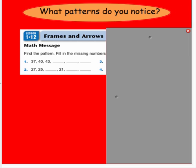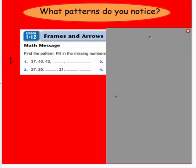Take a look at the math message. The question wants you to look for a pattern and then fill in the missing numbers. Number 1, we're starting at 37 and then it's going up to 40 and then up to 43. I can see the numbers are increasing, so I know I'm adding 3. So 37 plus 3 is 40, 40 plus 3 is 43, 43 plus 3 brings me to 46, 46 plus 3 brings me to 49, and 49 plus 3 brings me to 52.